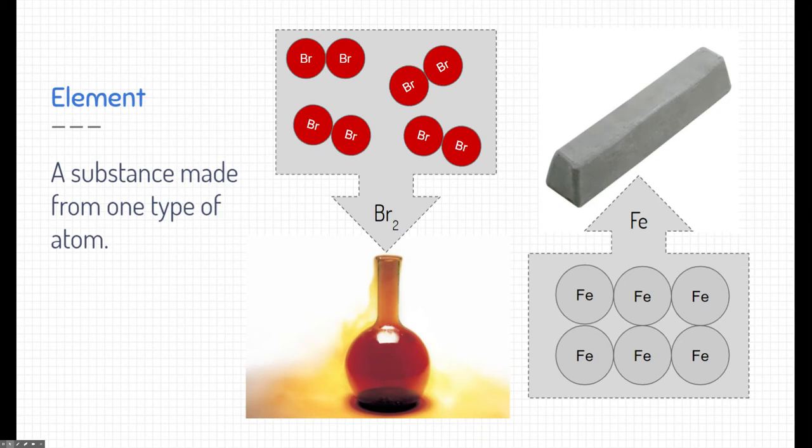An element is a substance that's just made from one type of atom. Here, for example, we have on the left side this gas, which is bromine gas. If we had some powerful microscopes, we could maybe look at the atoms of bromine and see that this substance is made from just bromine elements.